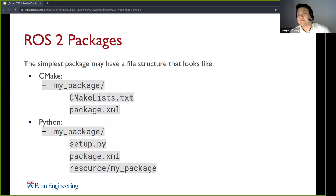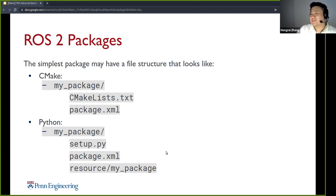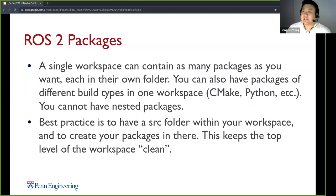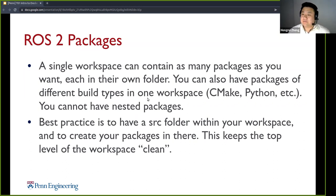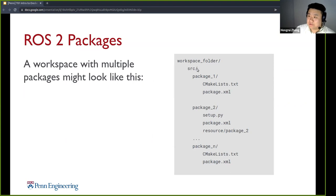The simplest package in ROS might have a file structure like this. For CMake you'll have the two files, and for Python you have the directory with setup.py, package.xml, and something that's created for you. A single workspace can contain many packages. You can have different types of packages in the same workspace, but you cannot have nested packages. The best practice is to have a source folder within your workspace and then put different packages in there. In the src folder, you can have multiple packages and even different types with different languages.